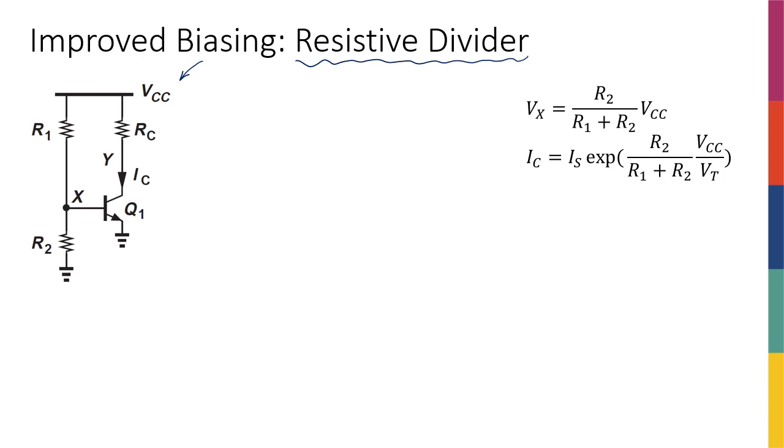R1 and R2. And I'm going to set my base voltage by selecting the value of R1 and R2 in a way that the ratio R2 over R1 plus R2 gives me the voltage that I want.